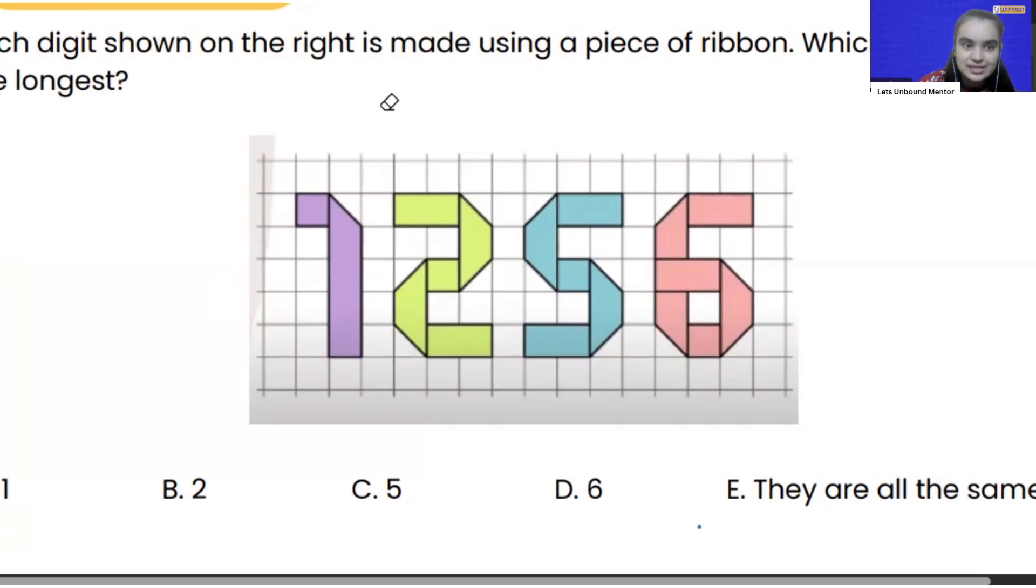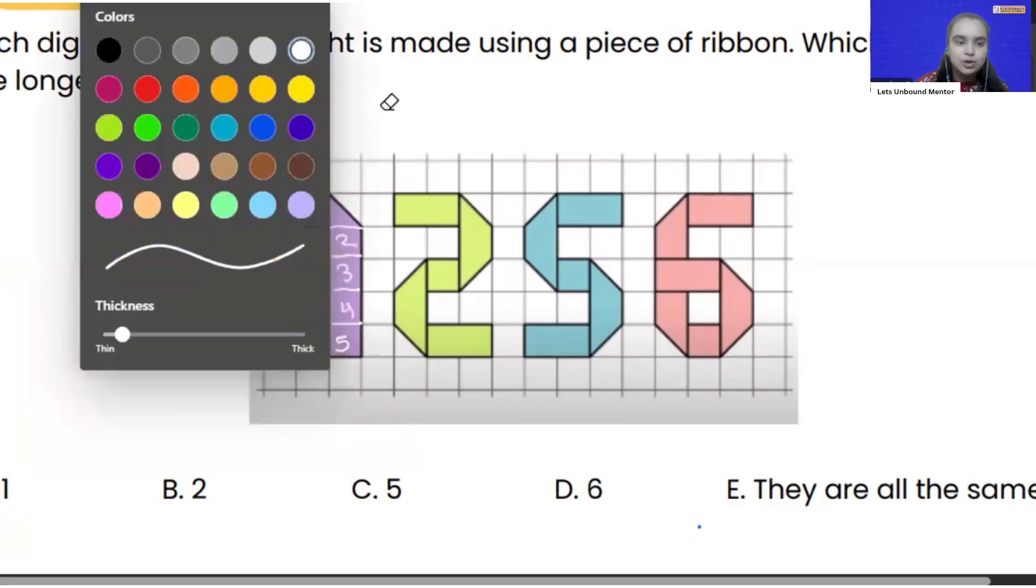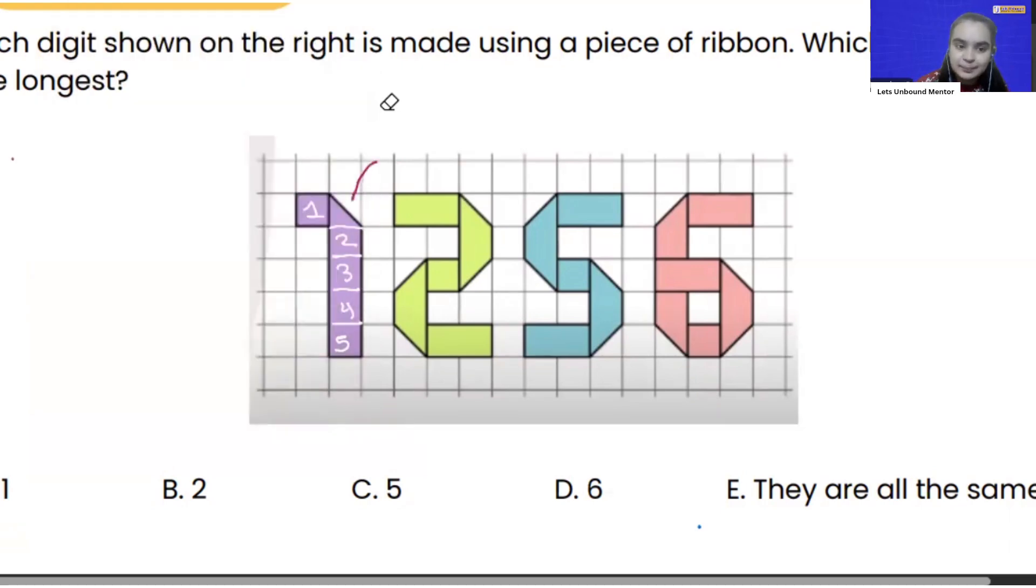So if you will see number 1 it is made up of 1 square, 2 square, 3 squares, 4 squares and 5 squares. Right now I am not going to count this folded pieces. I am just splitting it into full and final squares that is 5 for the first digit.